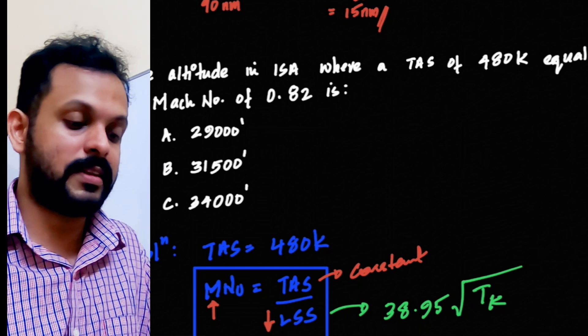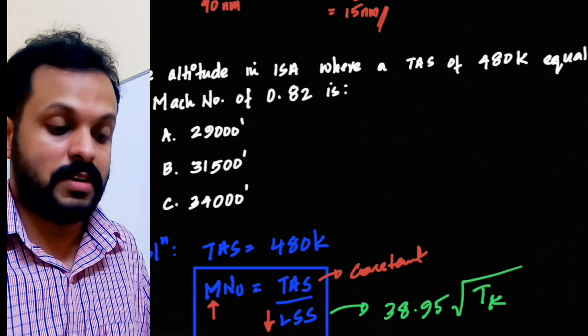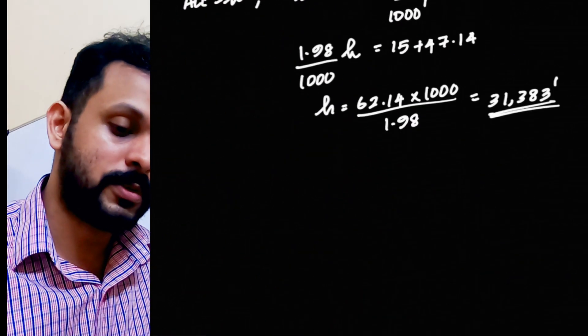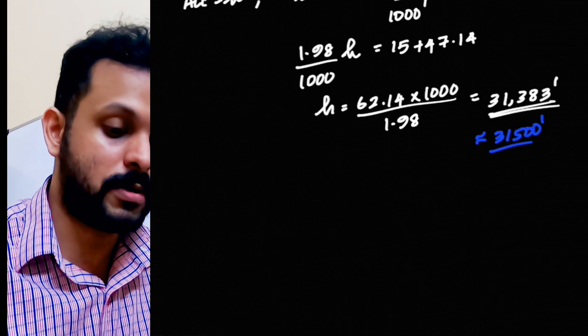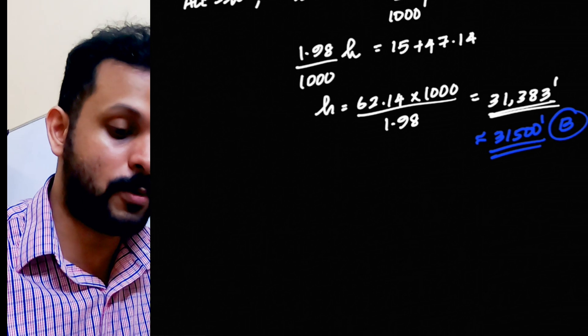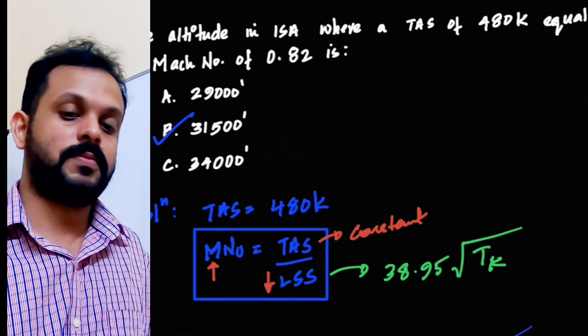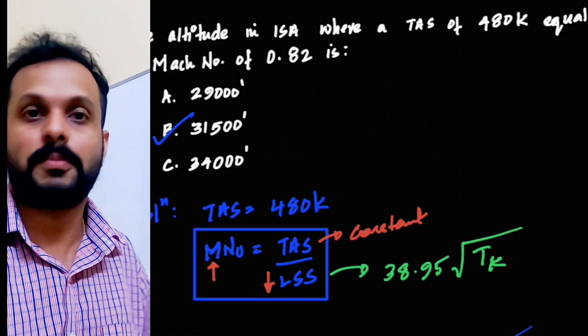Now, look at the options here: 29,000, 31,500 and 34,000. Definitely, you can round it off to 31,500. Let's go back to the answer here. If I have to round off, I would round off this to 31,500 feet to match with the answer. Therefore, Bravo is the answer. I hope this question is clear. If you have questions, do drop in the comments and I'll get back to you.